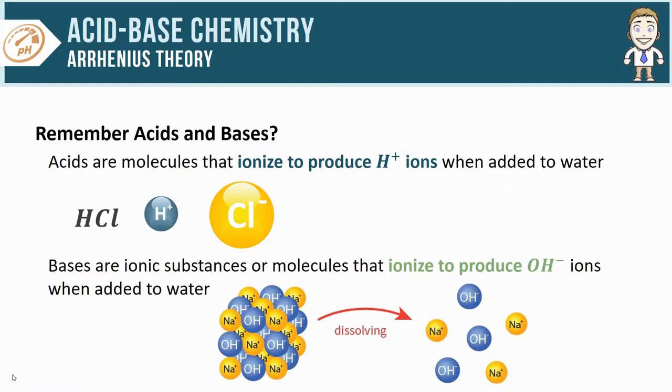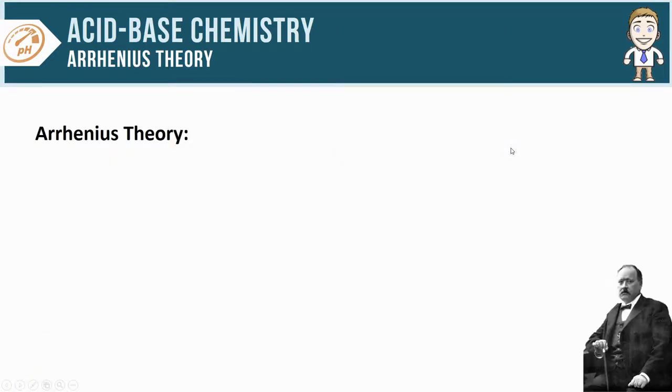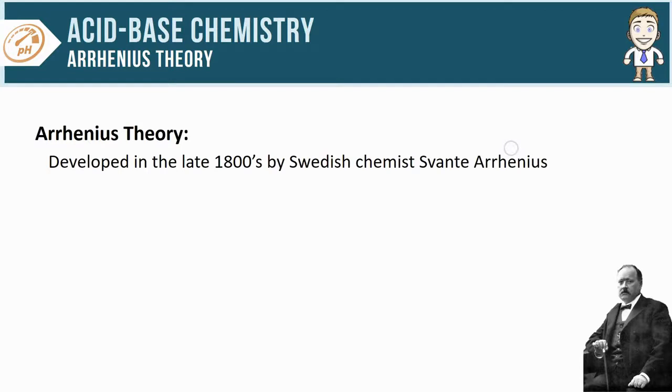In this video we're going to go just a little bit deeper and take a look at one of the specific theories that is used to explain why various substances exhibit acidic or alkaline behavior. I'm of course talking about the Arrhenius Theory of Acids and Bases. It was developed in the late 1800s by Swedish chemist Svante Arrhenius.